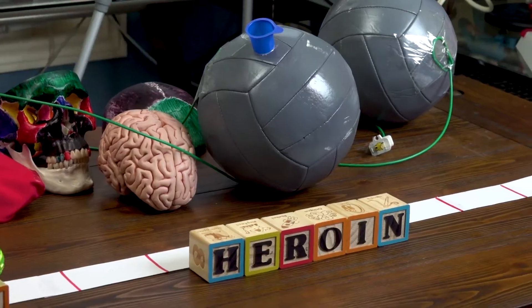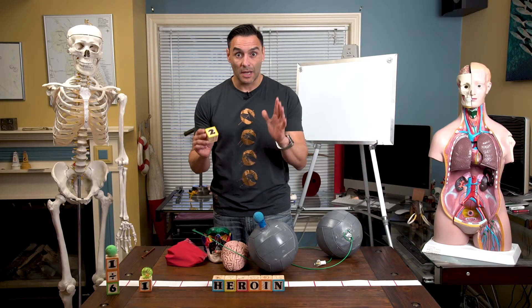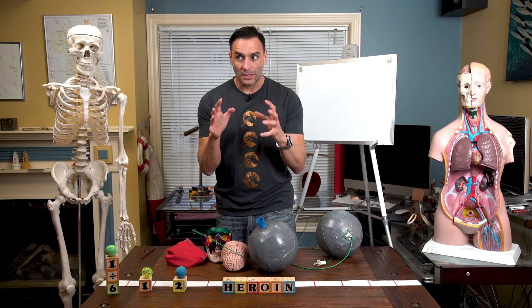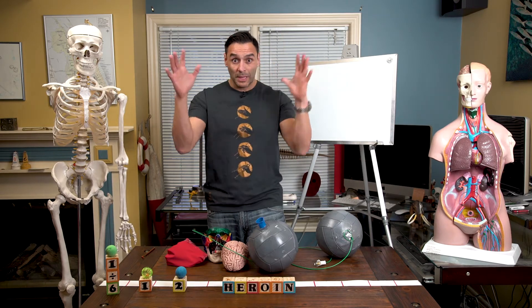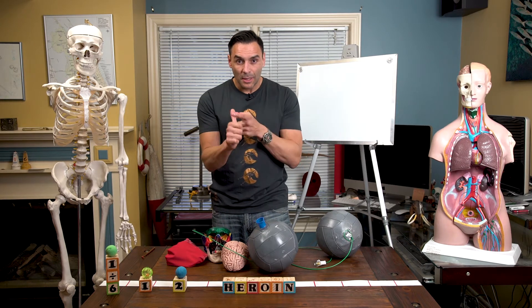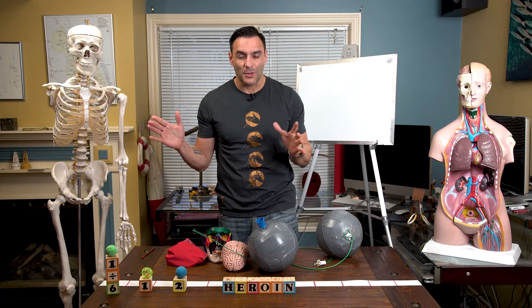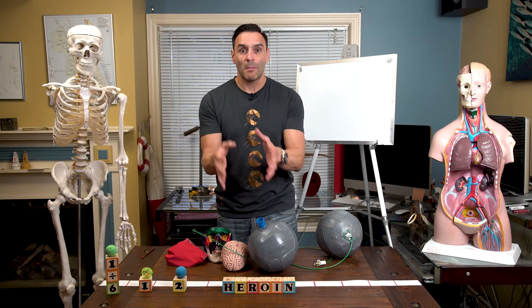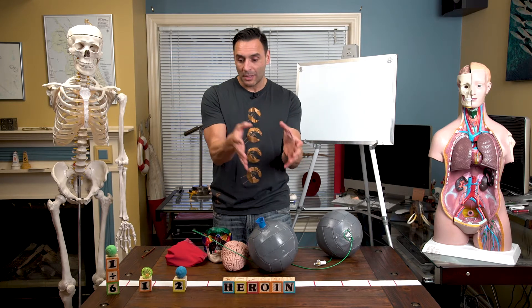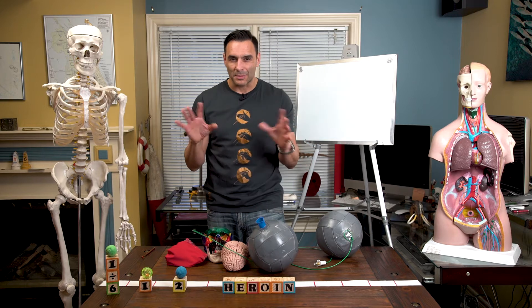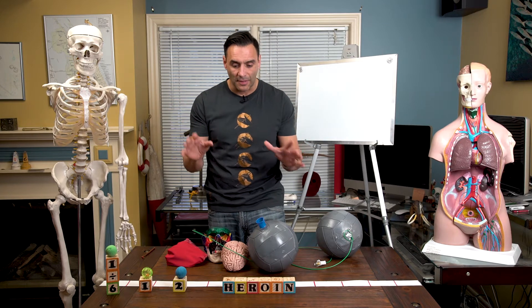This is heroin. Heroin has twice the potency of morphine — remember morphine is 1, so heroin is 2. The poppy plant contains as natural ingredients morphine, codeine, and about 35 other substances. Heroin is made from morphine, so man makes heroin from what Mother Nature produces. This is why heroin is sometimes called semi-synthetic.